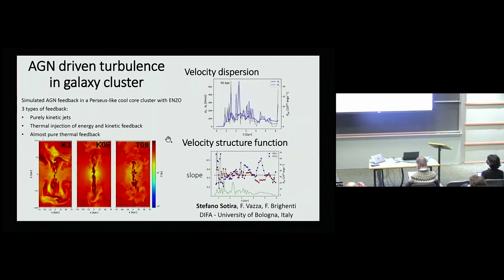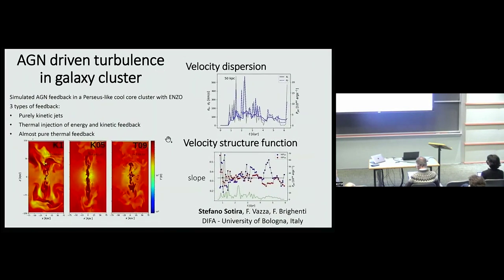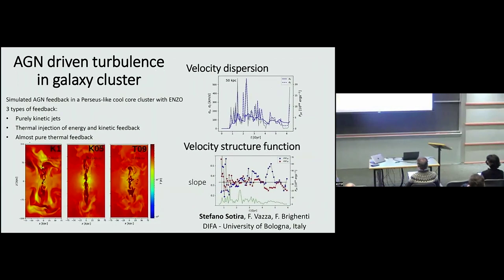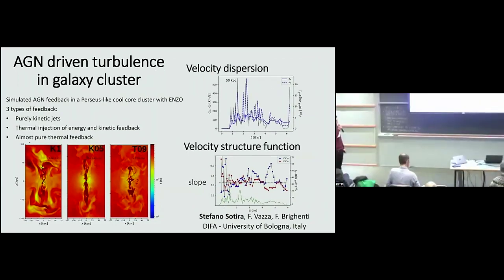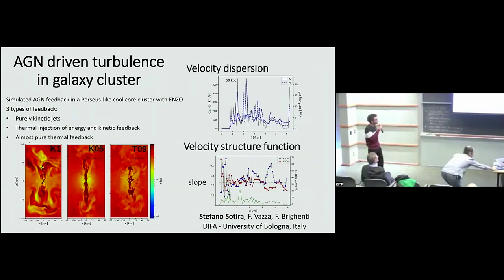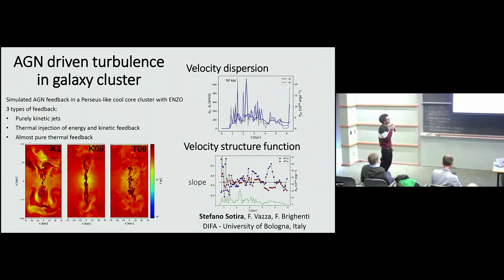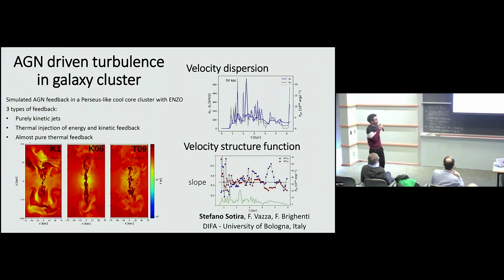I'm Stefano Sotira from the University of Bologna, a second-year PhD student working with Franco Vazza and Fabrizio Brighenti. I've been running hydrodynamic simulations of AGN feedback in galaxy clusters using the ENZO code, focusing on different types of feedback ranging from pure kinetic feedback to almost pure thermal feedback.